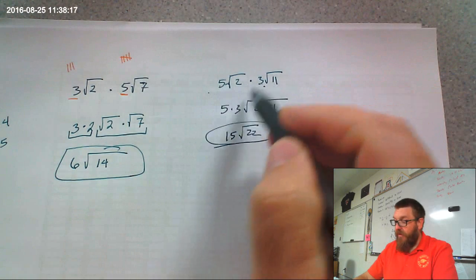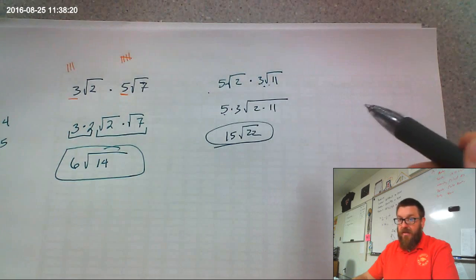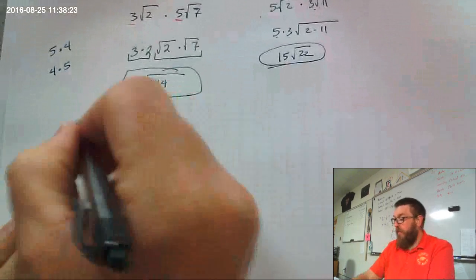So, I hope you got it right. Put the rational numbers together first, put the irrational numbers together, and go to town.